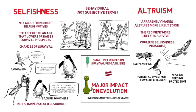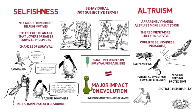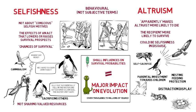An example is the distraction display, where a mother bird feigns injury by limping away from the nest and holding out one wing to pretend it was broken. A predator such as a fox will be lured away from the nest containing the chicks, and then the parent bird gives up the pretense and leaps into the air when the fox tries to bite it.